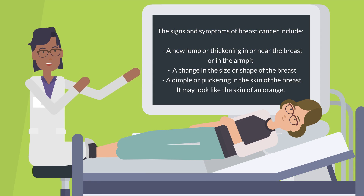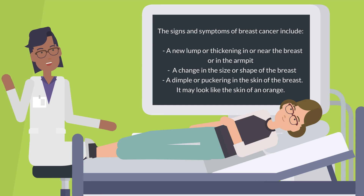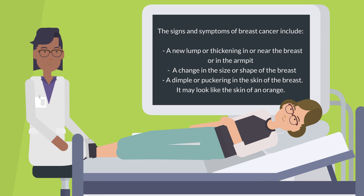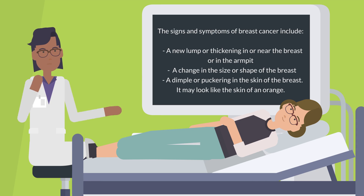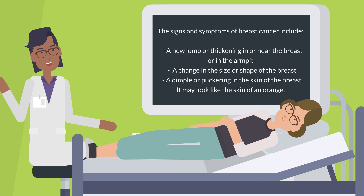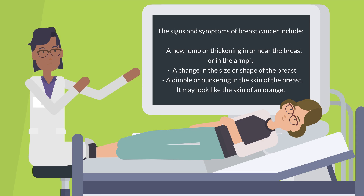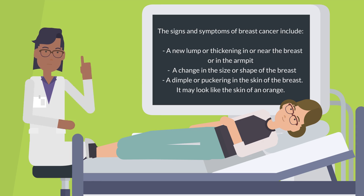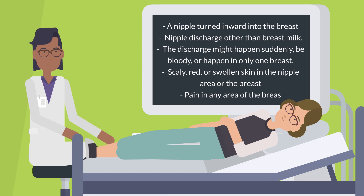The signs and symptoms of breast cancer include: a new lump or thickening in or near the breast or in the armpit, a change in the size or shape of the breast, a dimple or puckering in the skin of the breast — it may look like the skin of an orange — and a nipple turned inward into the breast.